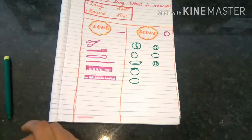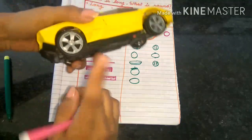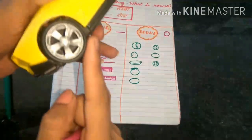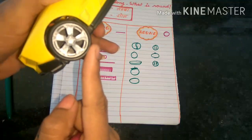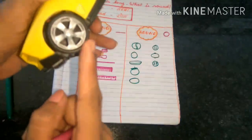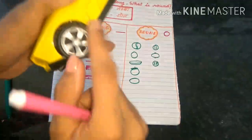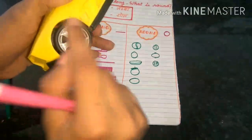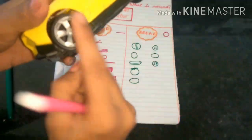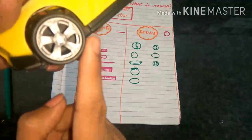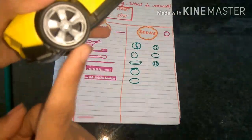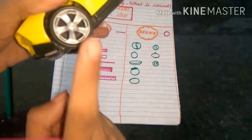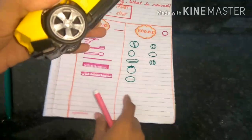Next object I have is this. This is a tire. So how is it looking? It is round. So let's draw this wheel here.